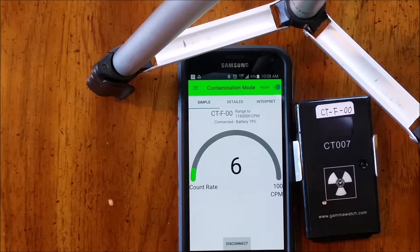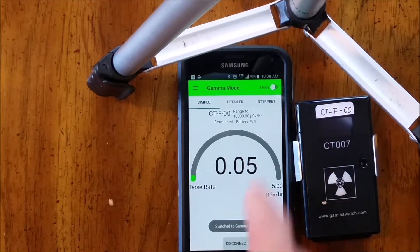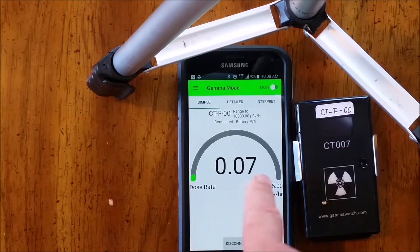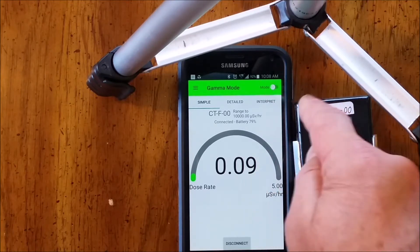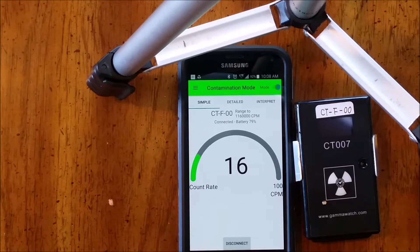And the app lets you switch between measuring contamination and measuring dose rate. So we're in dose rate gamma mode right now. And we switch back to contamination. That changes the units from CPMs to microsieverts an hour.